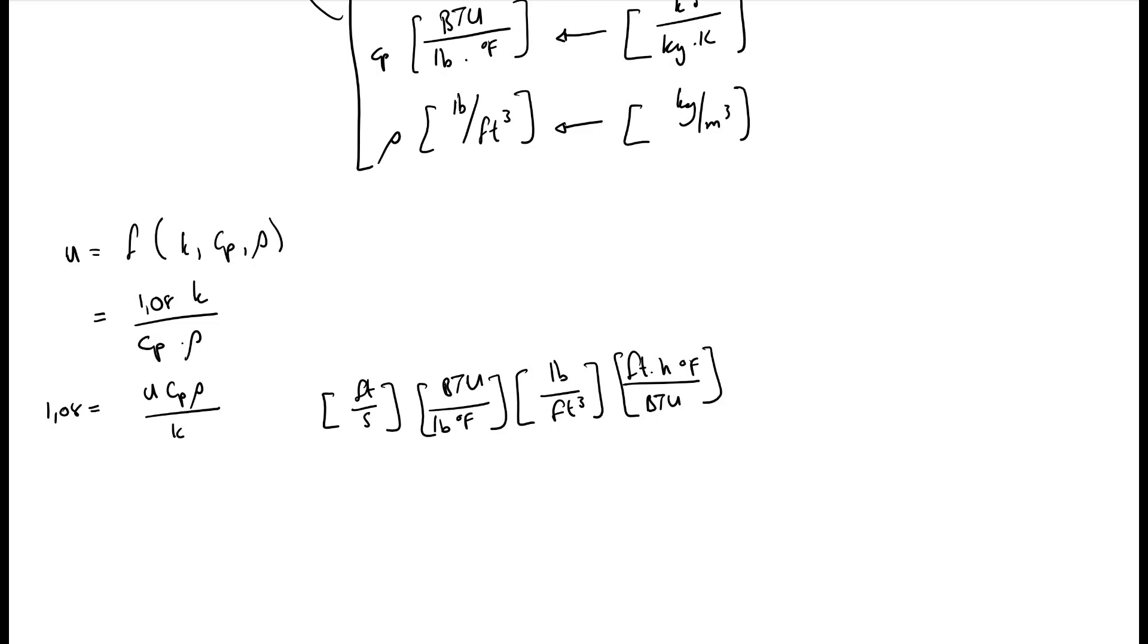If we now go, we can cancel the units out. The btu's cancel out. The pounds cancel out. The degrees Fahrenheit cancel out. But this foot cancels and that foot cancels that out. We have a foot at the bottom. So that the units from a constant become hour over foot seconds.